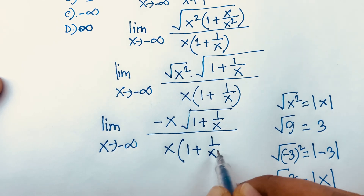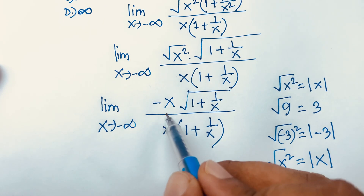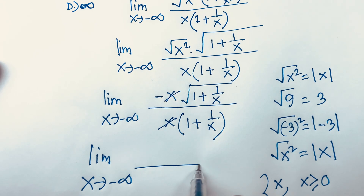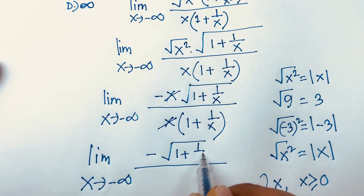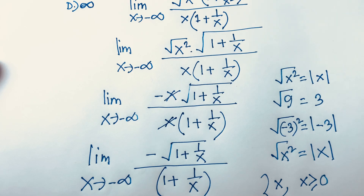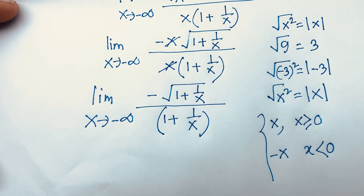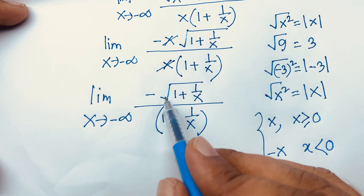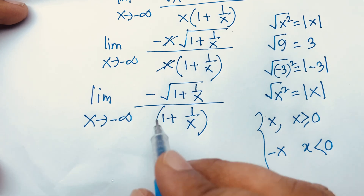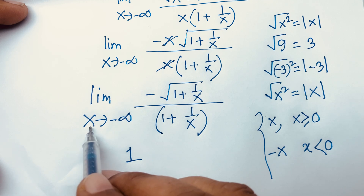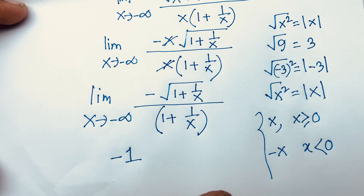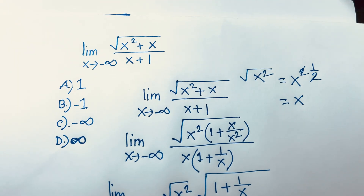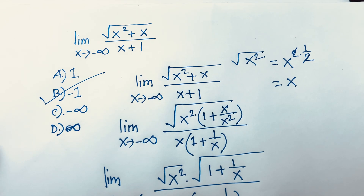Factor out x: the x terms cancel, leaving limit x→-∞ of -√(1 + 1/x) · (1 + 1/x). As x→-∞, 1/x → 0, so √(1 + 0) · (1 + 0) = 1 · 1 = 1. With the negative sign, the final answer is -1. So the correct option is B: -1.